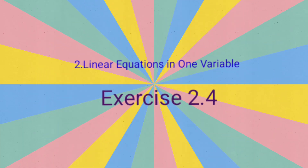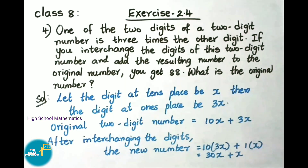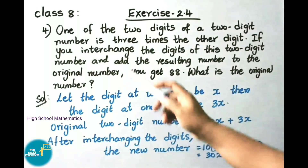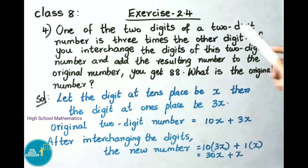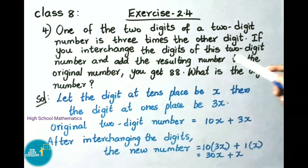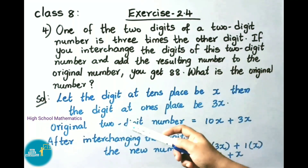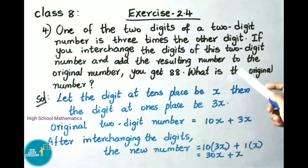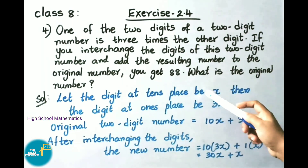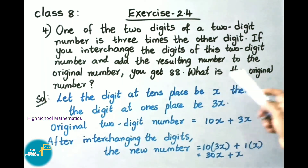Hello everyone, welcome to High School Mathematics channel. Today we are going to learn Class 8 Chapter 2, Linear Equations in One Variable, Exercise 2.4 from question 4 onwards. Question number 4: One of the two digits of a two-digit number is three times the other digit. If you interchange the digits and add the resulting number to the original number, you get 88. What is the original number?